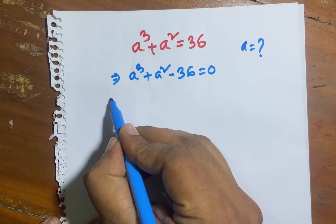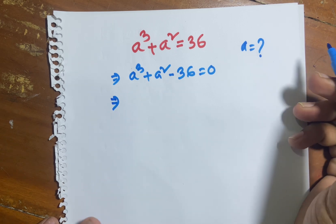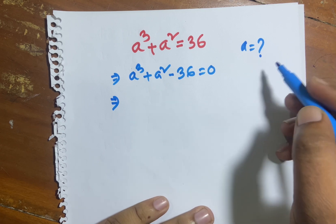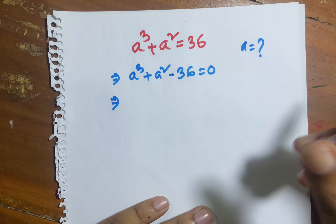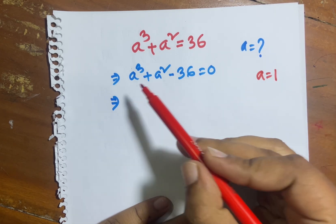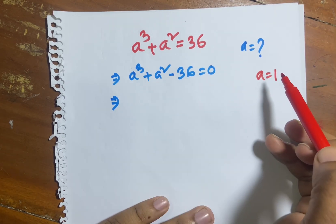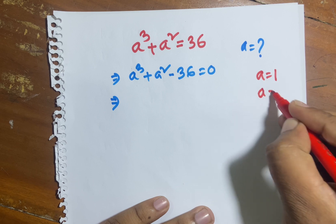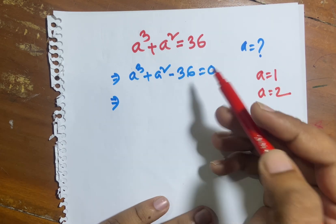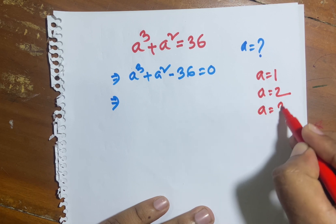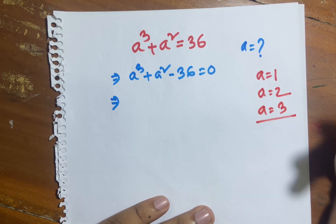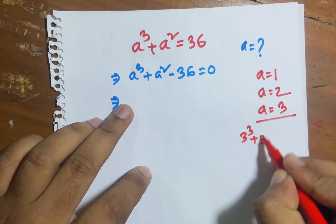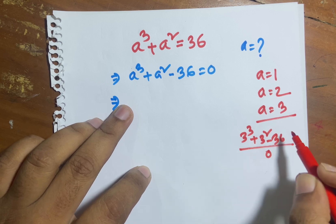Now I find out one factor of this equation. First I think a equals 1 — then 1^q plus 1 squared minus 36 is not 0. If a equals 2, then 2^q plus 2 squared minus 36 is not equal to 0. If a equals 3, then 3^q plus 3 squared minus 36 equals 0.